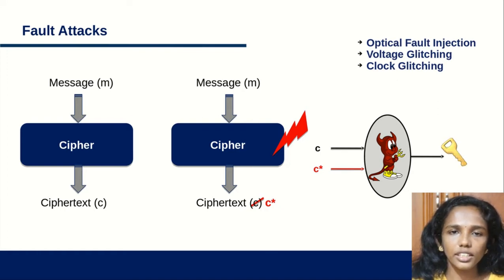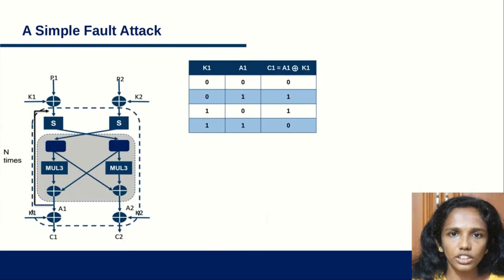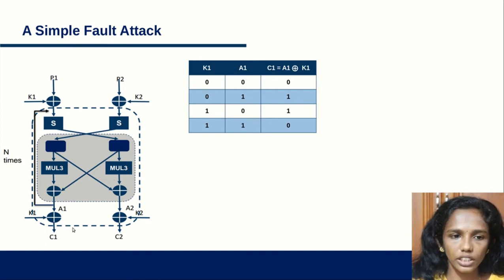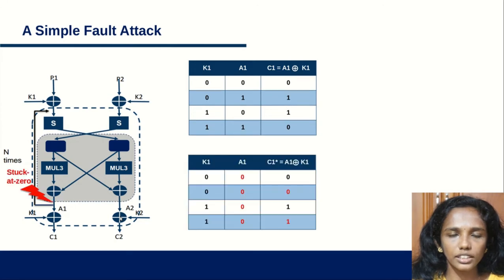Demonstrating a simple fault attack on a toy cipher that takes two byte input, P1 and P2, and has operations like key addition, subbyte, diffusion function which happens n times, and the final round key addition. If we inject a fault before the last round key addition, the output changes such that the key is visible at the output.